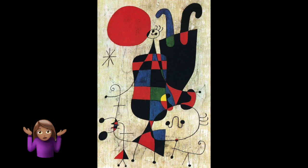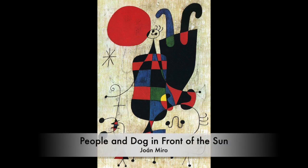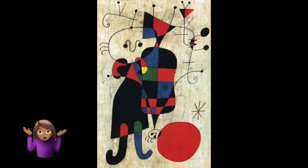Maybe the name Miró gave to his painting will help us figure out what it might be. He called his painting 'People and Dog in Front of the Sun.' Where is the sun? Where are the people? Can you see a dog? Can you even turn the painting upside down to see another one of the people?